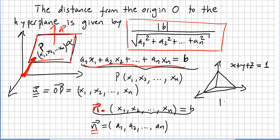it will be 1, right, because B is 1, and it will divide 1 squared plus 1 squared plus 1 squared, square root. So the distance from this hyperplane to the origin will be 1 over square root of 3. Really easy, right?